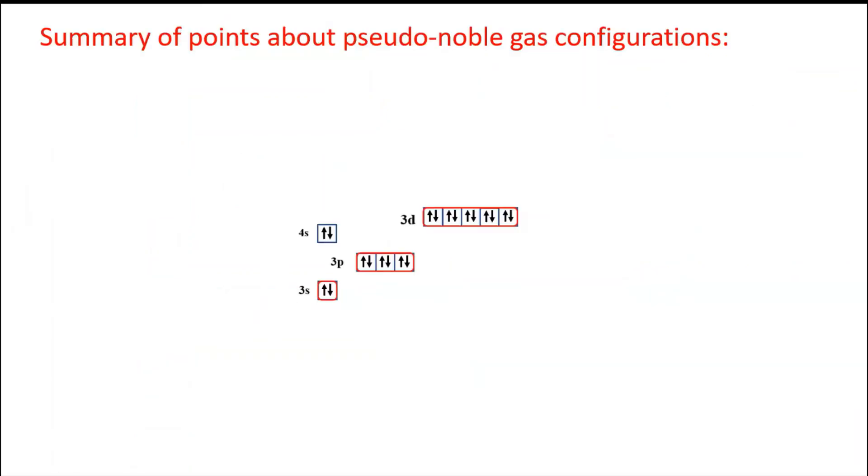Summary of points about pseudo noble gas configurations. These are some of the most important things to remember. First is that it only happens with some elements in the transition metals. No other metals do this. This means if you have a question about pseudo noble gas configuration of potassium or something like that, it's a trick question.